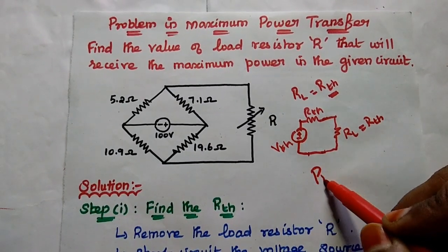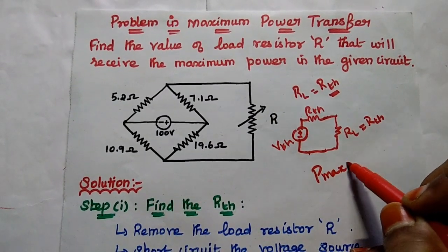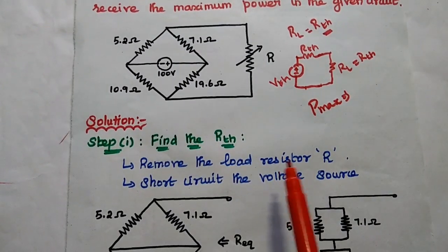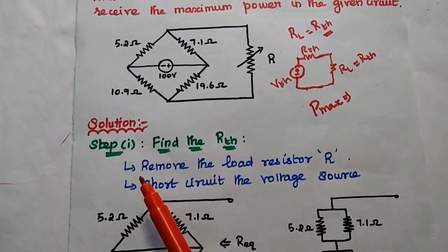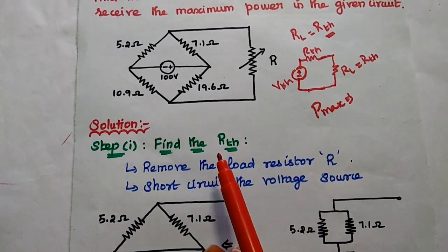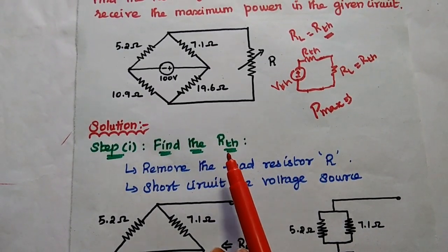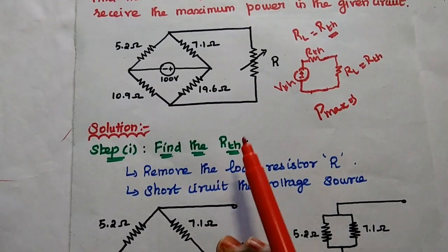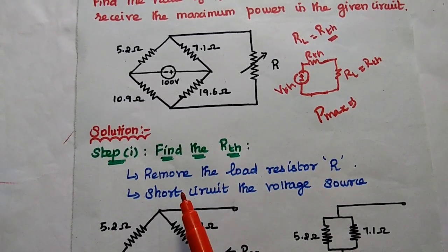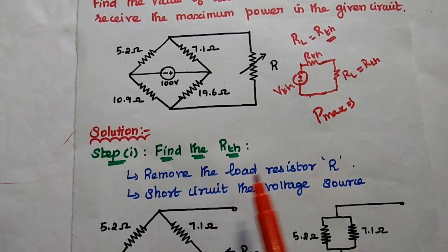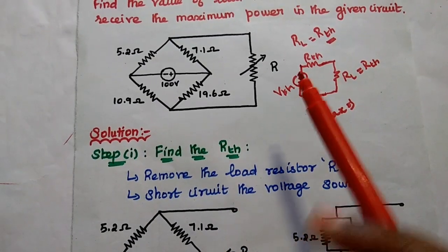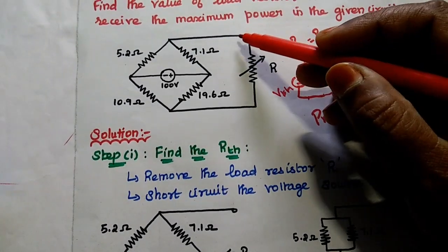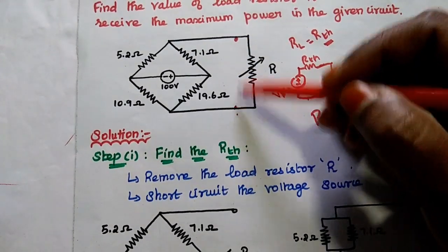Then we can find out the maximum power delivered to this load resistor. So in the first step, we are going to find out the Thevenin's equivalent resistance, that is Rth. The condition is to remove the load resistor, so we remove this load resistor and consider these points as AB terminals.